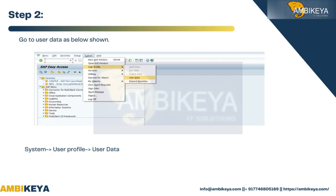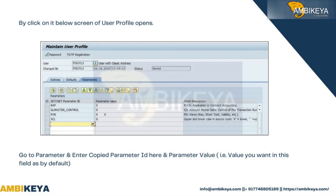Step 2: go to user data via System > User Profile > User Data. Click to open the user profile screen. Go to the Parameters tab and enter the copied parameter ID and the parameter value — i.e., the value you want as default in this field.